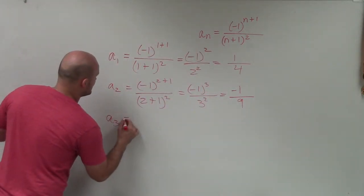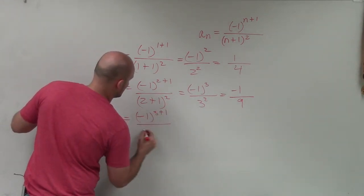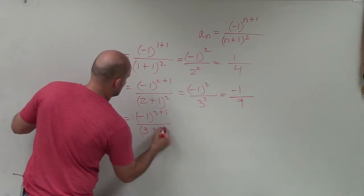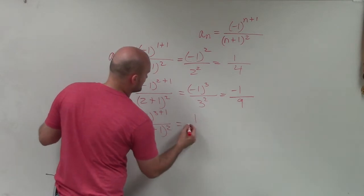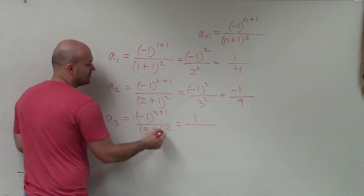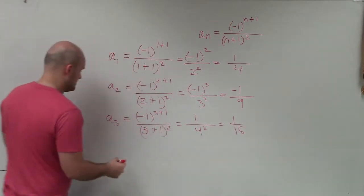A third is going to be negative 1 to the 3 plus 1 divided by... oops, sorry. Divide by 3 plus 1 squared. So 3 plus 1 is 4. Again, that's an even power so it's going to be a positive 1. And 3 plus 1 is going to be 4 squared. So that becomes a positive 1 16th.